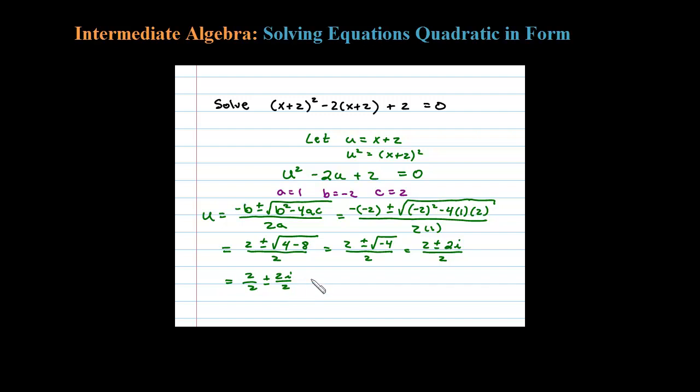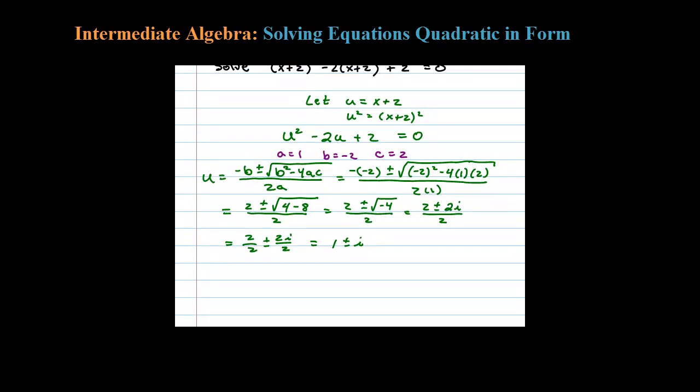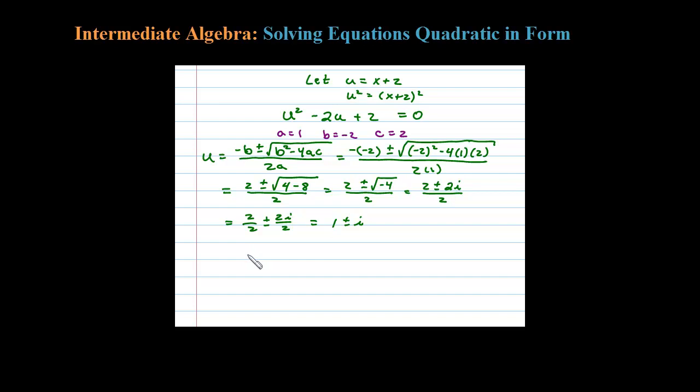Simplifying, we're going to have 2 over 2 plus or minus 2i over 2. Remember that 2 is a common denominator, so we certainly want to divide both of those terms by 2.